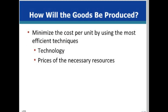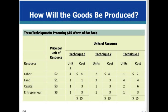When firms face competition, the market forces producers to use the most efficient production techniques; otherwise, the firm will be driven out of business. The combination of technology and the prices of the required resources determines the most efficient production technique. The producer will rationally choose the least costly method, because it is this method that leads to the greatest profit or to loss minimization.